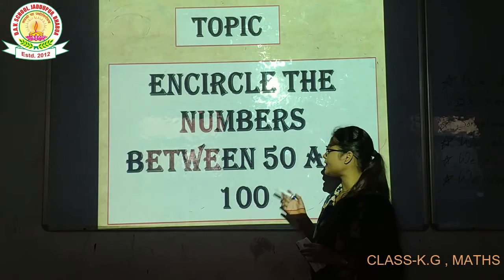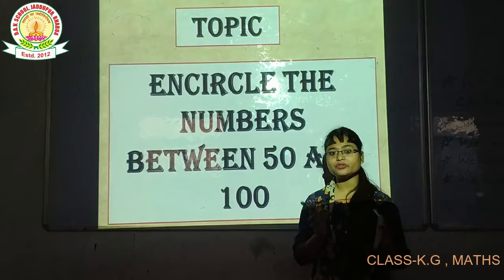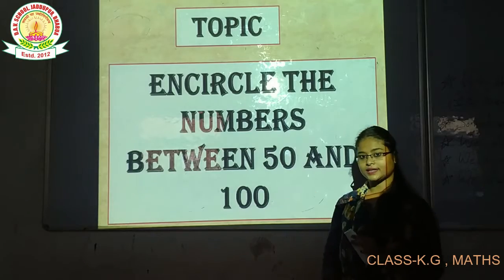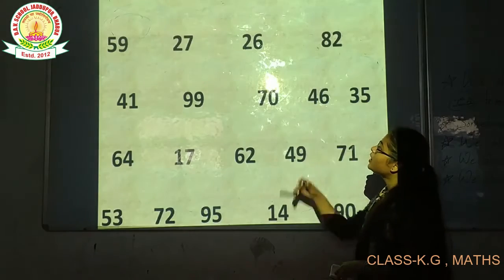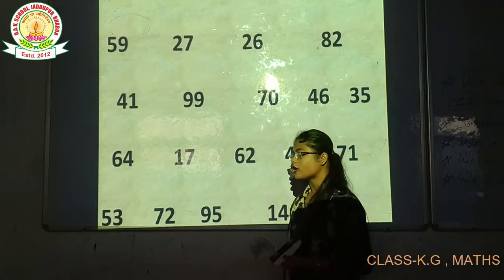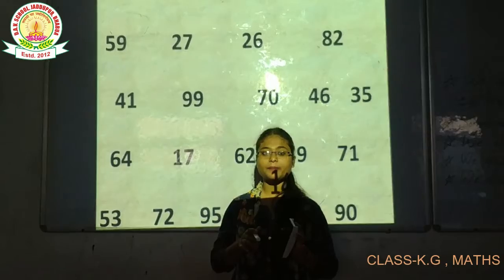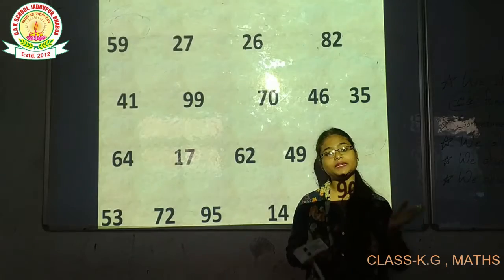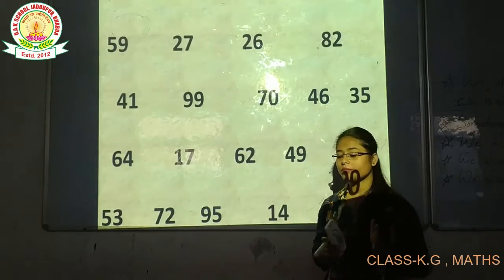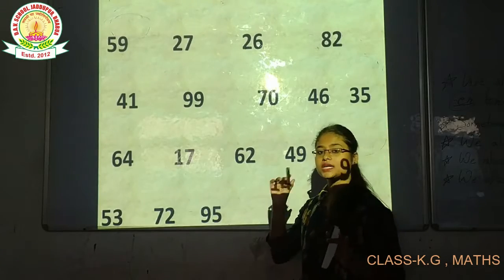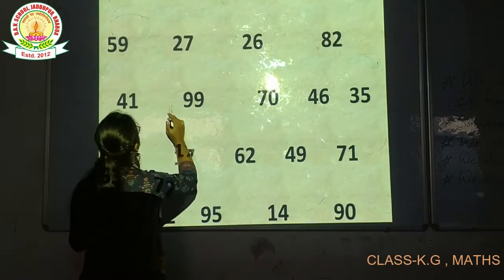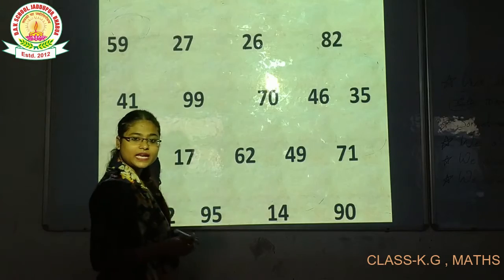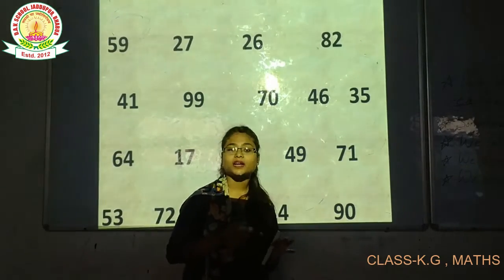In the previous video, we covered numbers 50 to 50. So now you can see that the numbers are 50 to 100. Let us see the numbers between 50 and 100 — numbers 50 and 100, between them.